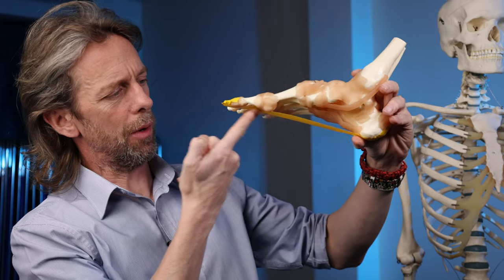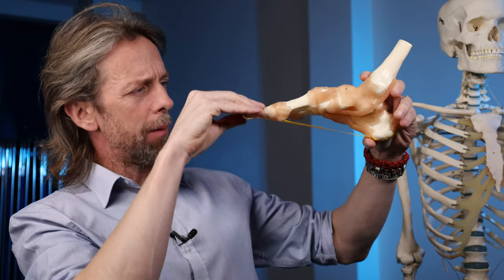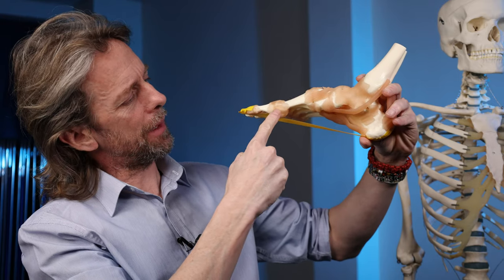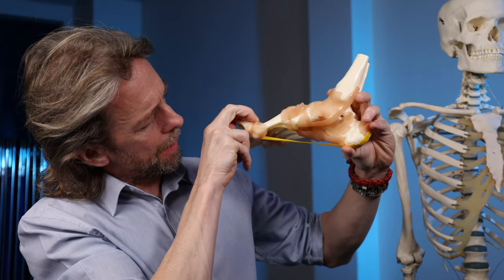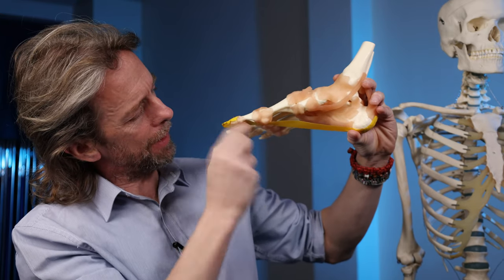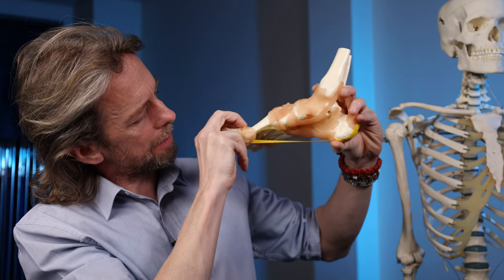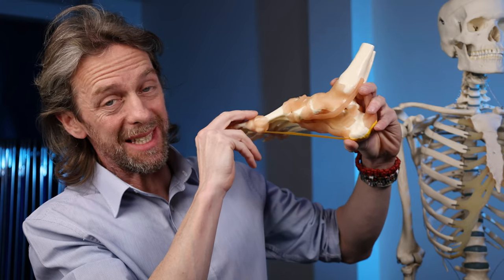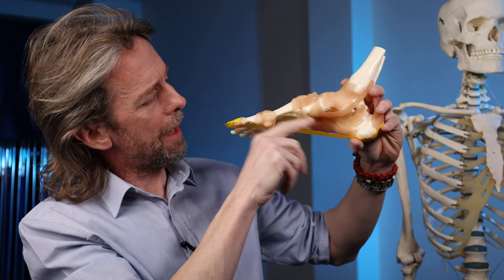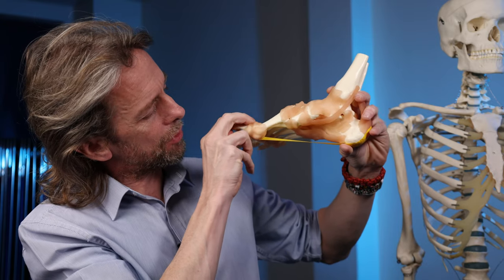Here's my plantar aponeurosis or an example of this—is probably a little bit too stretchy actually—but if I flex, if I dorsiflex this joint here, I think you can see the tension building in the plantar aponeurosis, which is what happens with every step when you run or walk.